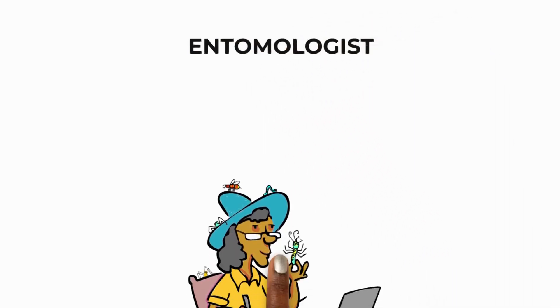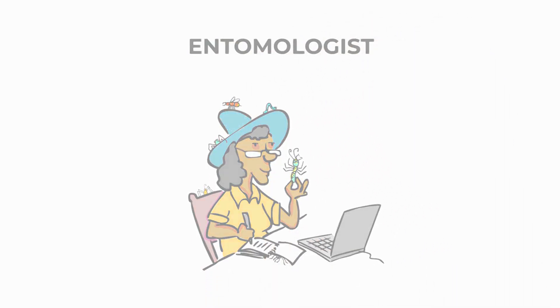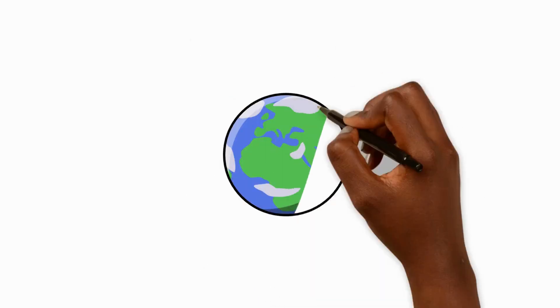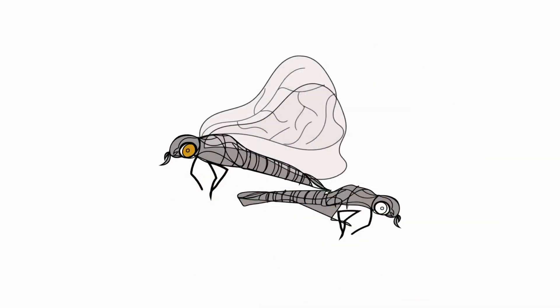Entomologists are scientists that study insects. Insects make up about 80% of all kinds of animals on the planet. They have a protective outer coating called an exoskeleton that they must shed so that they can grow. And this is called molting.